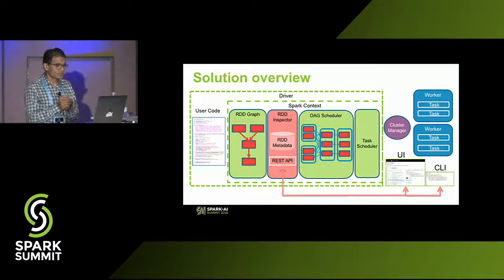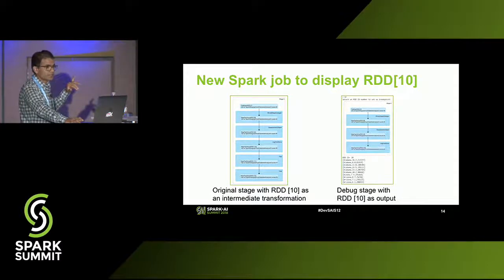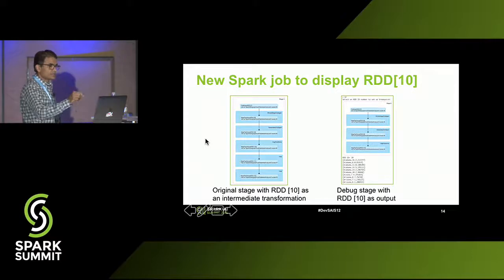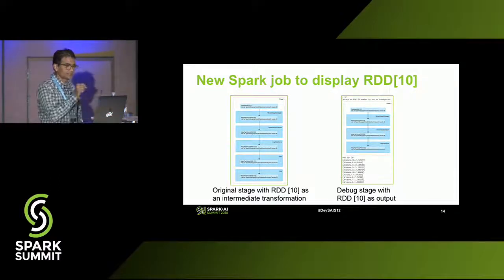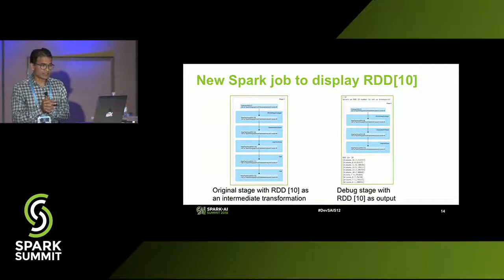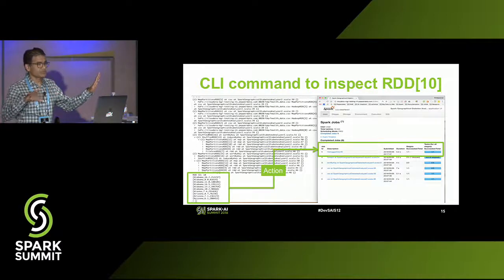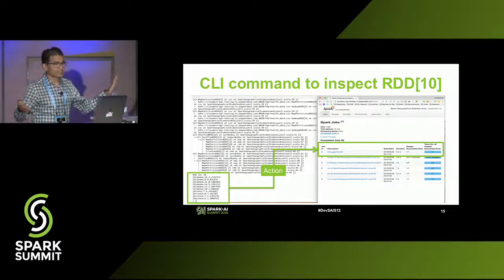You can then interact with your driver to say, I'm interested in looking at one particular RDD. For example, if you want to examine RDD 10, instead of breaking your code and putting a print statement in, we give you a CLI command — in this case, just say I want to look at RDD 10, and it'll show you the first 10 records of that RDD. A CLI on the left triggers an action which generates a new job, and that job's only function is to print that RDD.